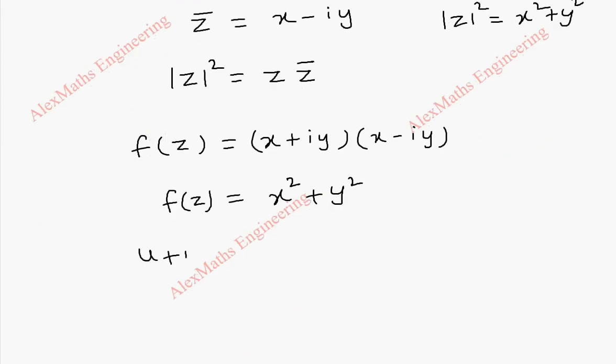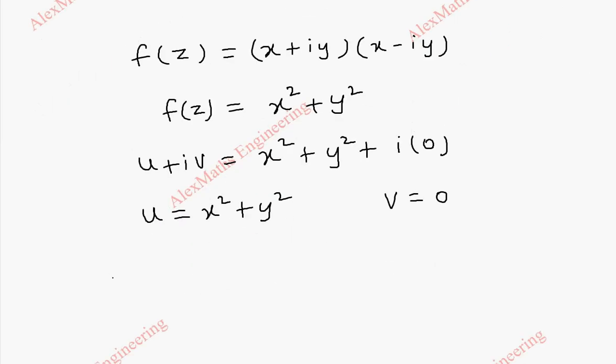So it is u + iv, that is f(z) = x² + y² and there is no i term, so i·0. So real part u is x² + y² and imaginary part v is 0. From this we can find uₓ (partial derivative with respect to x) which is 2x. uᵧ is 2y. vₓ is 0. vᵧ is 0 since v is 0.